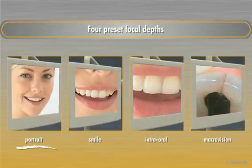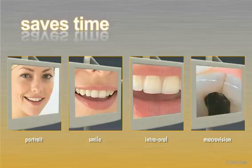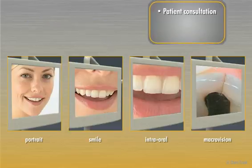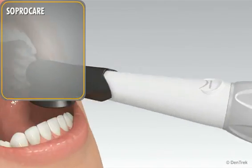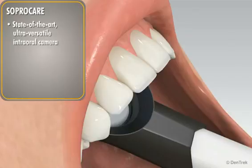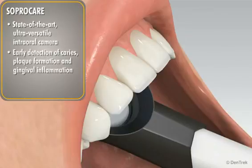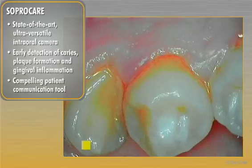With one simple click, you can easily switch between four preset focal depths: portrait, smile, intraoral, and macrovision. This saves time and aids in patient consultation, treatment, and follow-up. SOPROCare offers a state-of-the-art, ultra-versatile intraoral camera that provides the visual information you need for early detection of caries, plaque formation, and gingival inflammation, and it serves as a compelling patient communication tool.